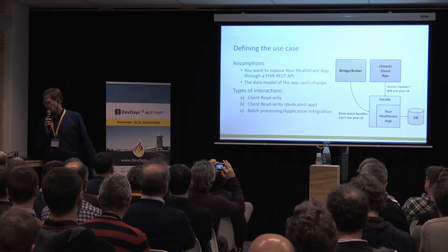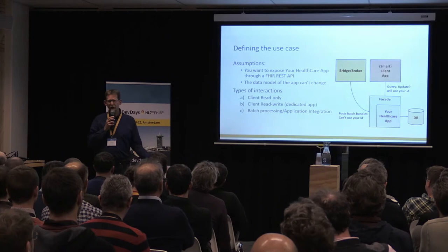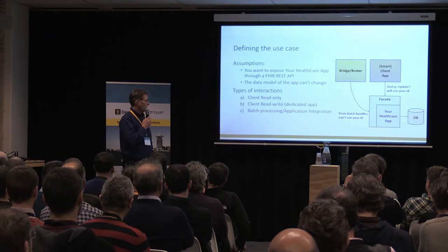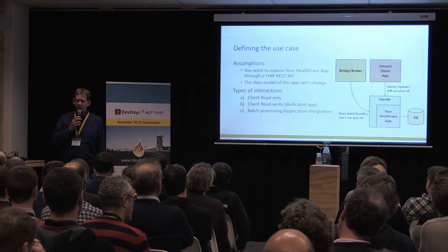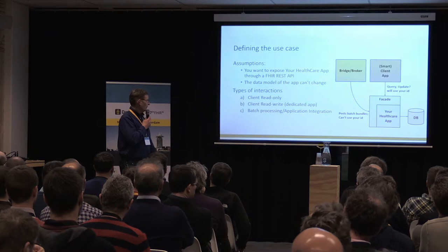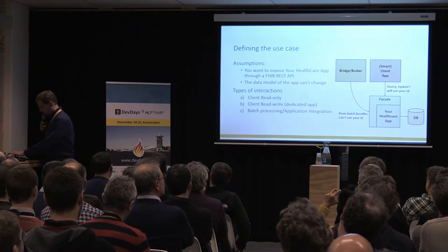What is common, and what I want to focus on, is that you have an existing application. You can maybe make small changes to your data model, but you cannot completely redo it in order to enable the FHIR API. What is important in the types of interactions is whether you're going to support just read-only data access — search and get — or also need to support updates and create actions, and whether you want to support batch processing.